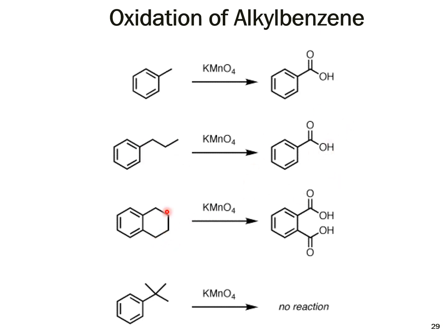If a substrate has two alkyl groups directly attached to the benzene ring, the molecule breaks accordingly and the product contains two carboxyl groups. If a tertiary alkyl group is on the benzene ring, that reaction does not proceed — KMnO4 cannot oxidize it.